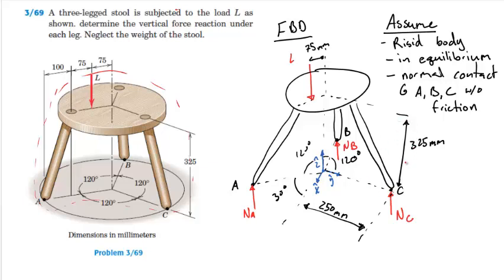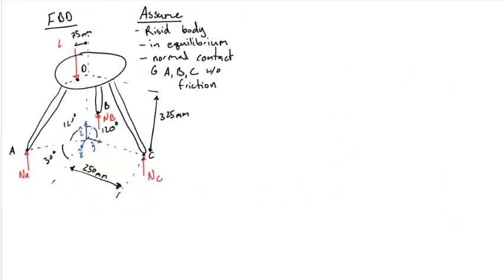Next I have drawn all the relevant dimensions to my free body diagram. The assumptions I make here are that the chair is acting as a rigid body, that the system is in equilibrium, and that we have normal contacts A, B, and C without friction. The next step in the analysis is to write out all the forces seen in my free body diagram in their vector components.